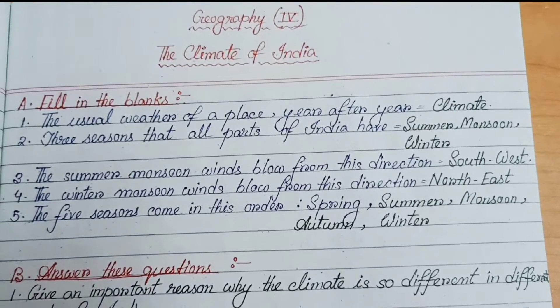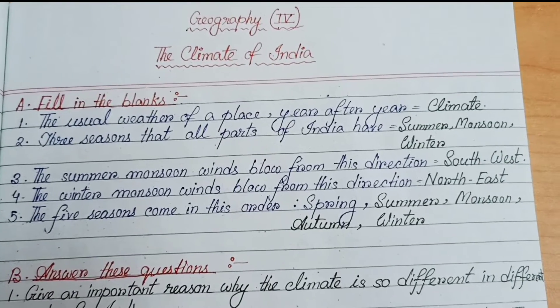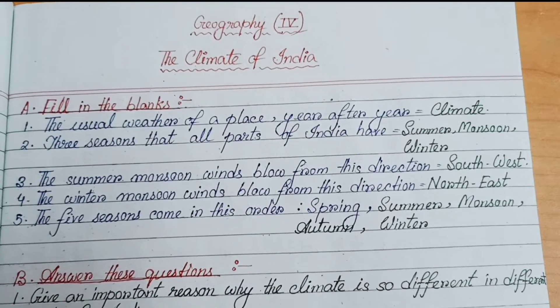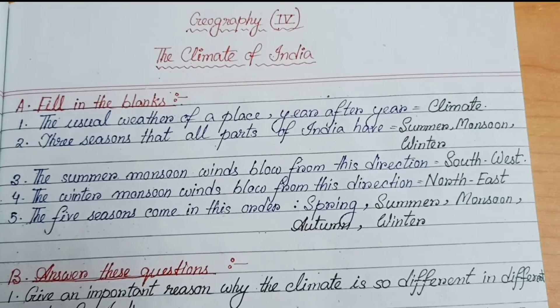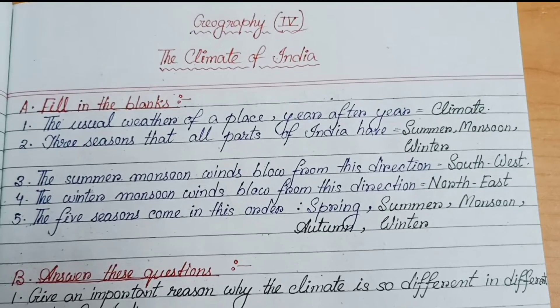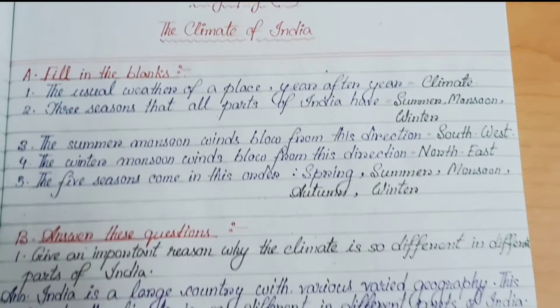Number 5: the five seasons come in this order — spring, summer, monsoon, autumn, winter.